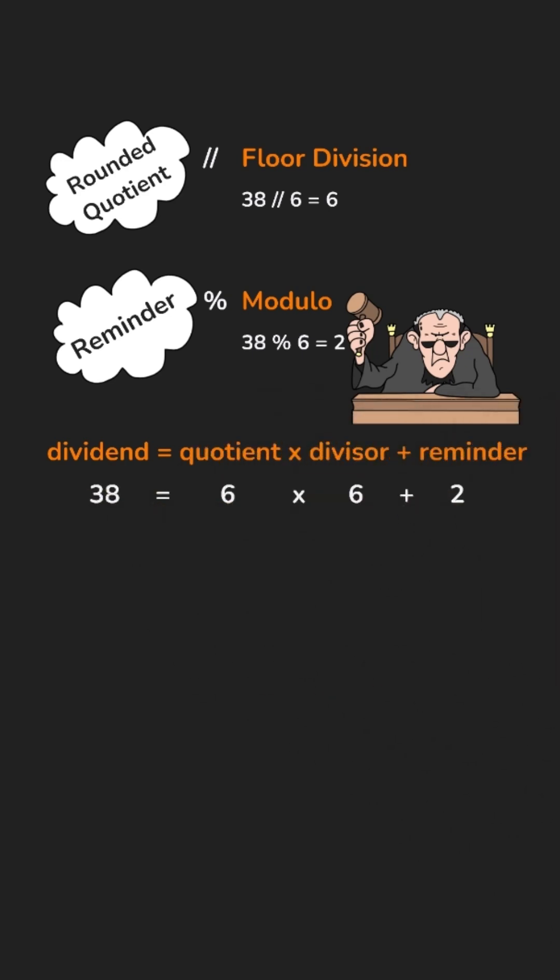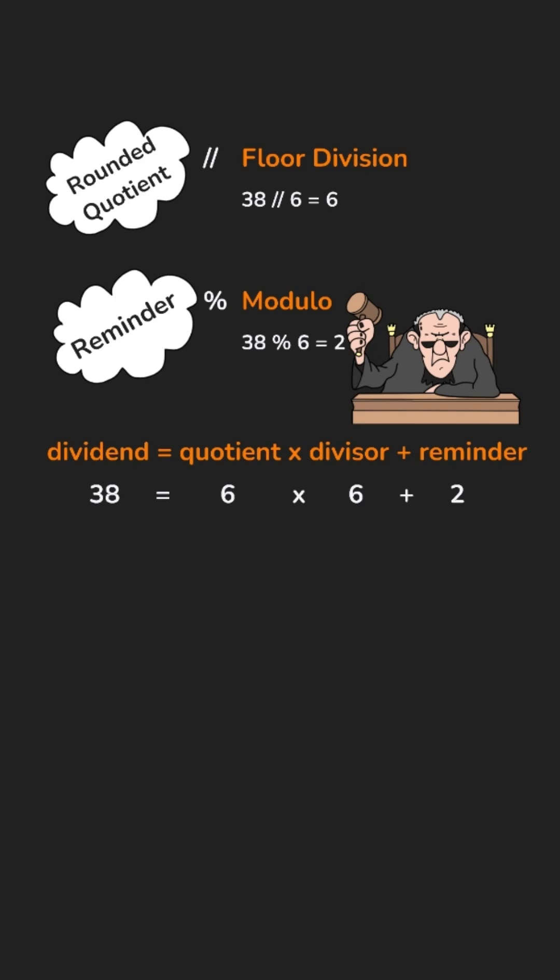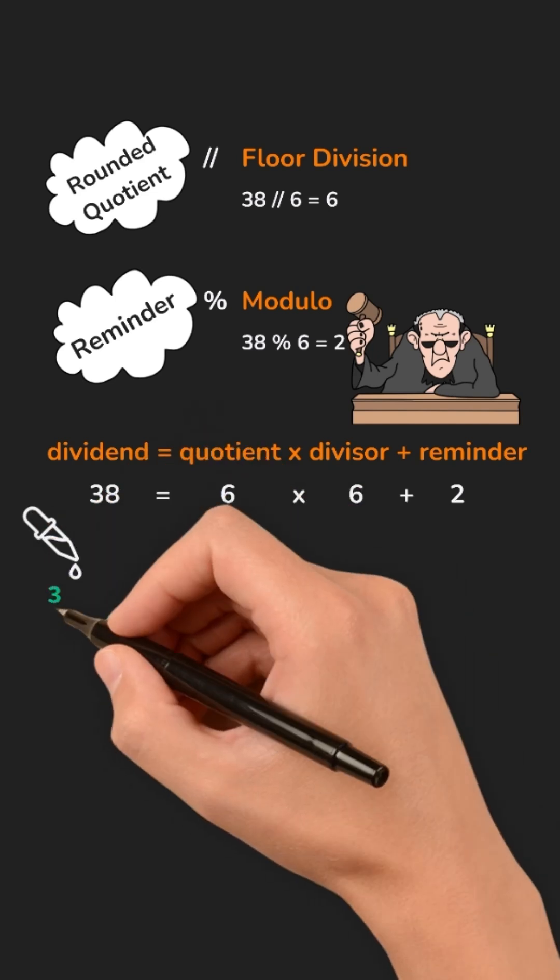This holds true even when the dividend or the divisor is negative. Let's try an example.